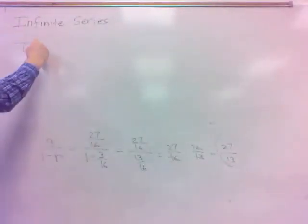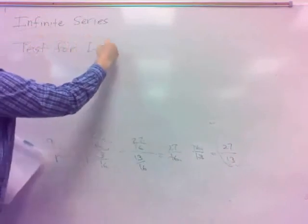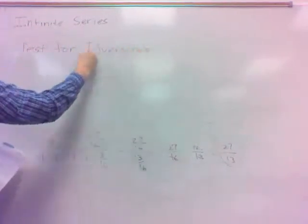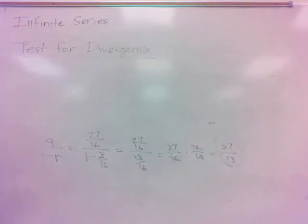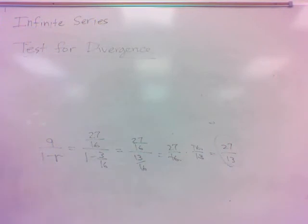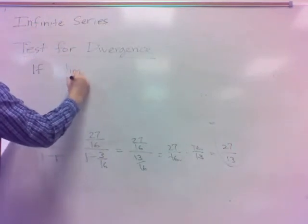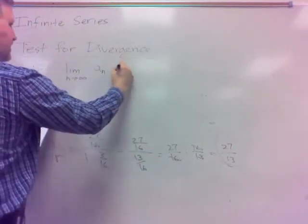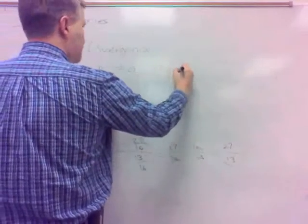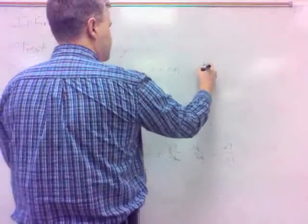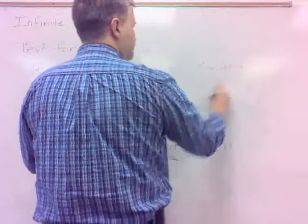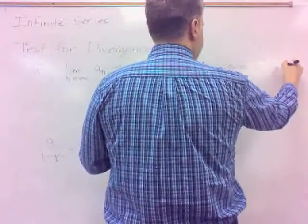Test for Divergence. Here it is: if the limit as n goes to infinity of a sub n does not equal zero, then the series — the sum of the a sub n's — diverges.